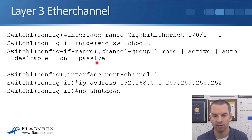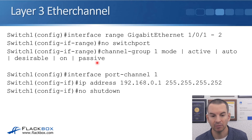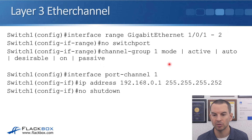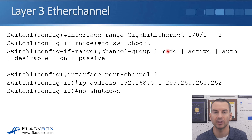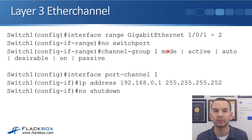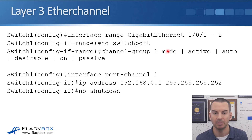The mode can be 'on' or 'passive' depending on whether you want a static EtherChannel, or you can use 'active' or 'passive' for LACP, or 'auto' or 'desirable' for PAgP. That will group the ports together into an EtherChannel, and we can then put our other configuration on that EtherChannel — that's where we're going to put our IP address.